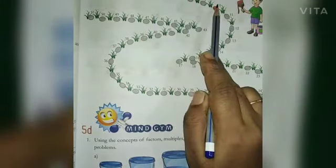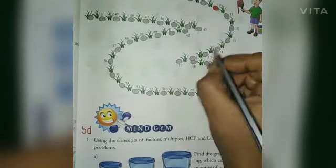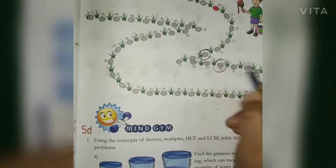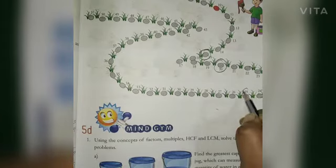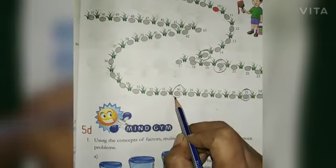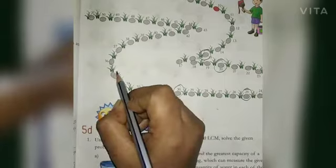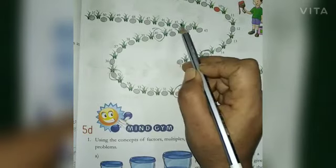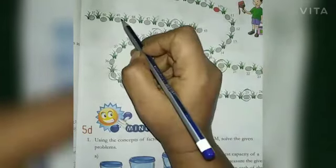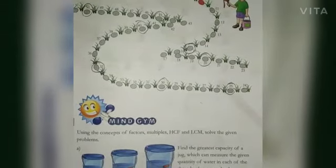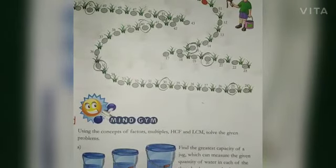5 ones are 5, 5 twos are 10, 5 threes are 15, 5 fours are 20, 5 fives are 25, 5 sixes are 30, 5 sevens are 35, 5 eights are 40, 5 nines are 45, 5 tens are 50. So we helped Shaker by using multiples of 5 to color every fifth stone on his path.